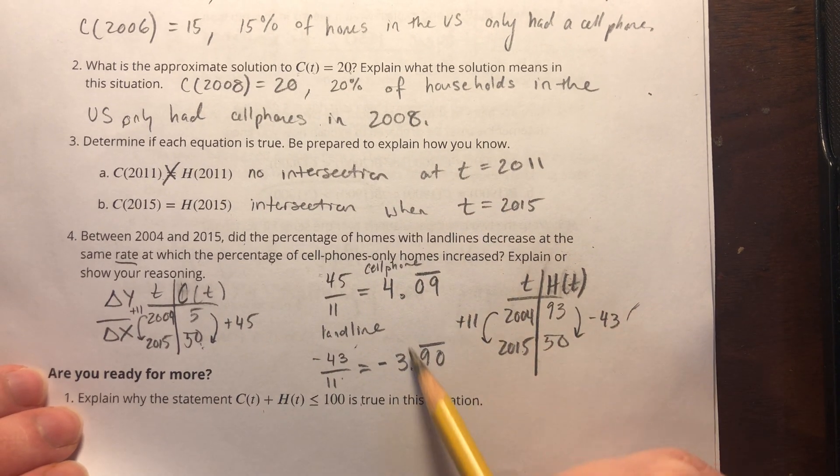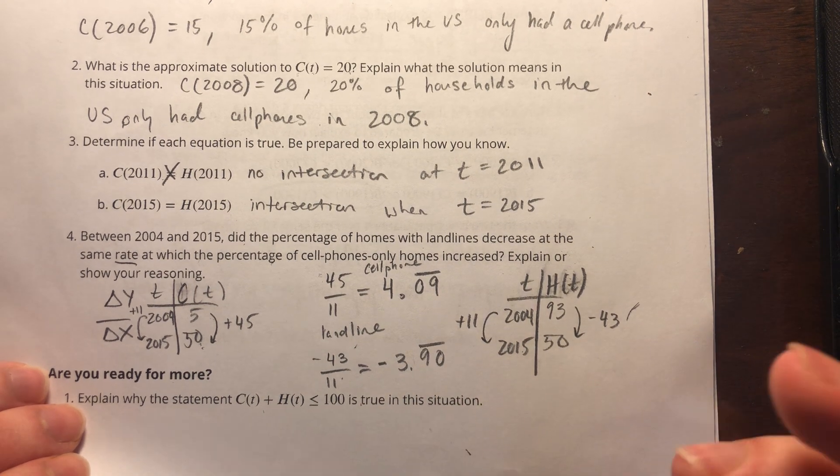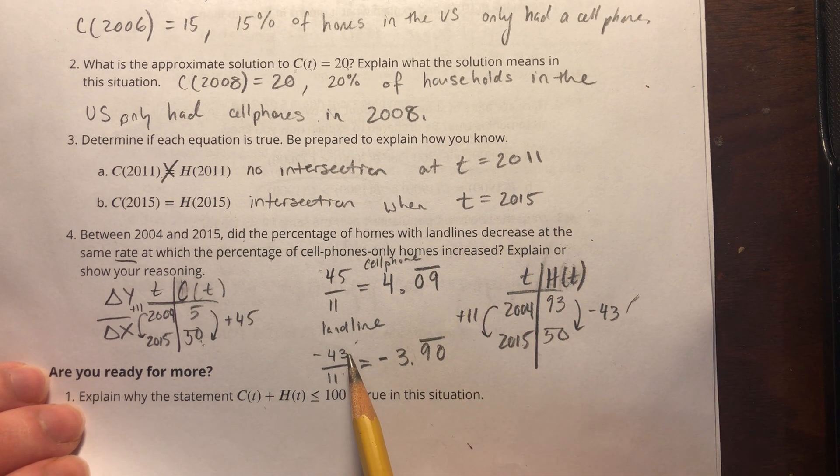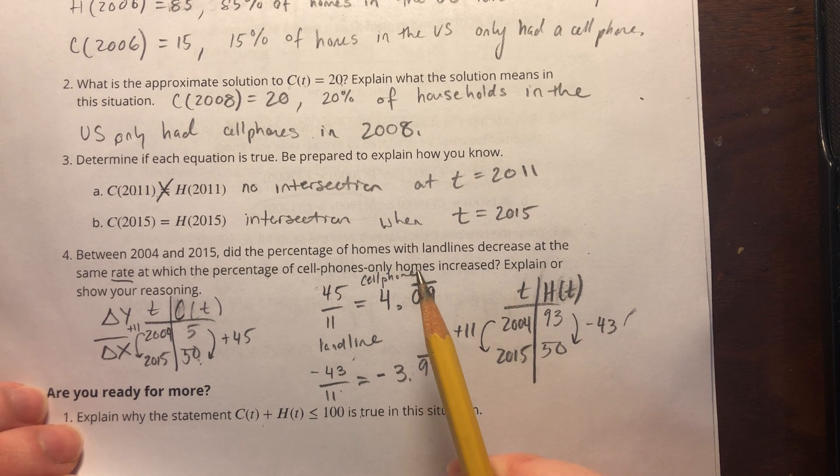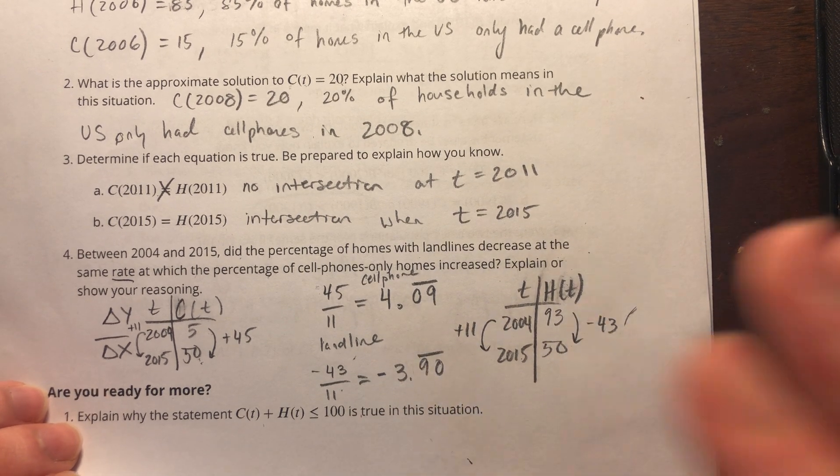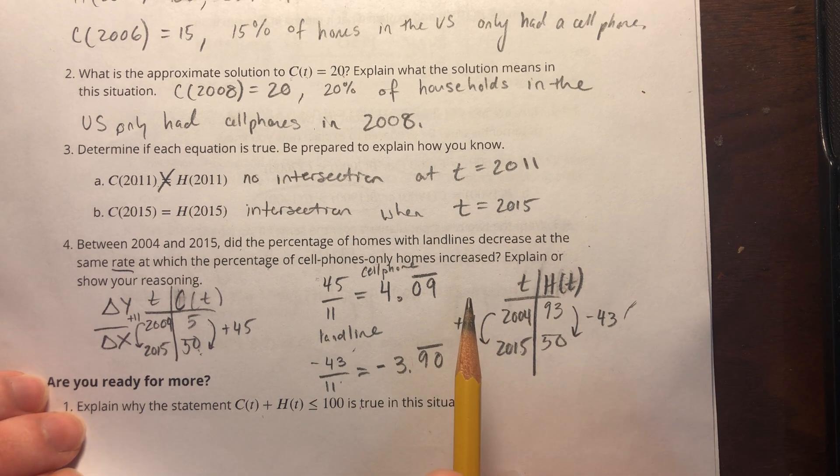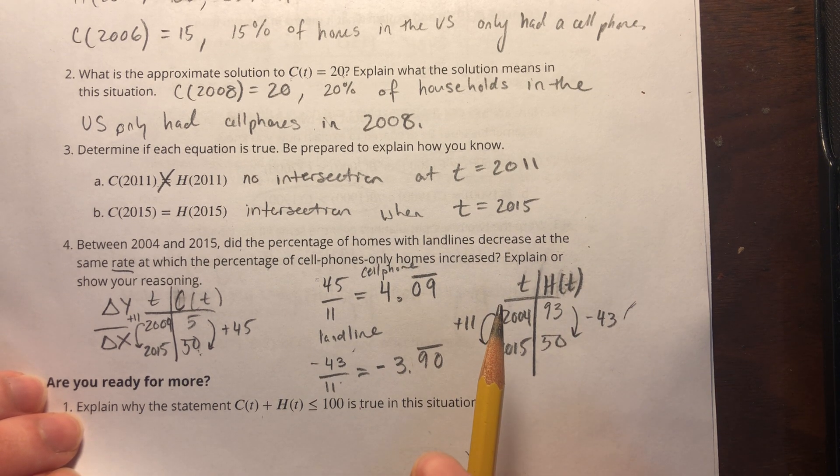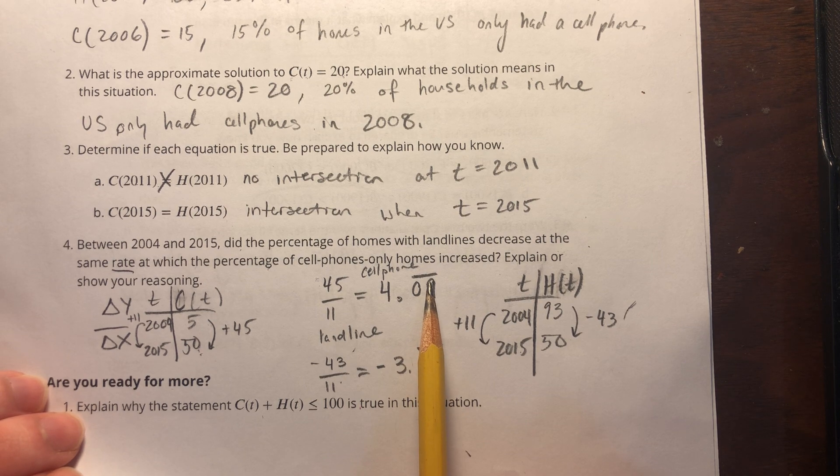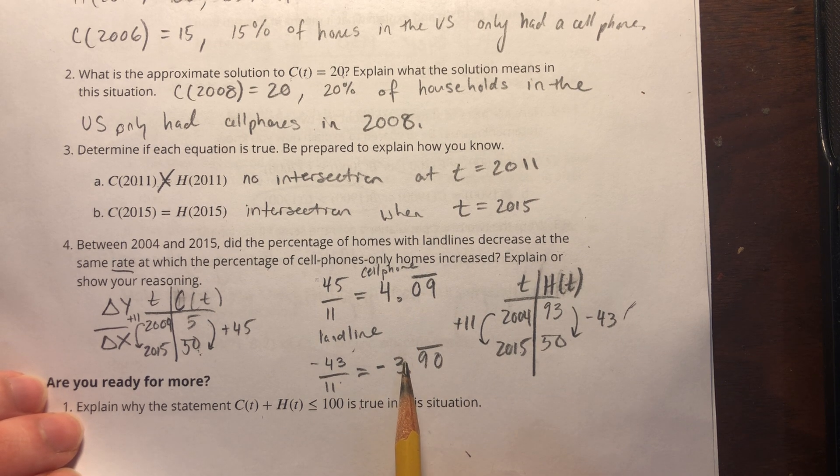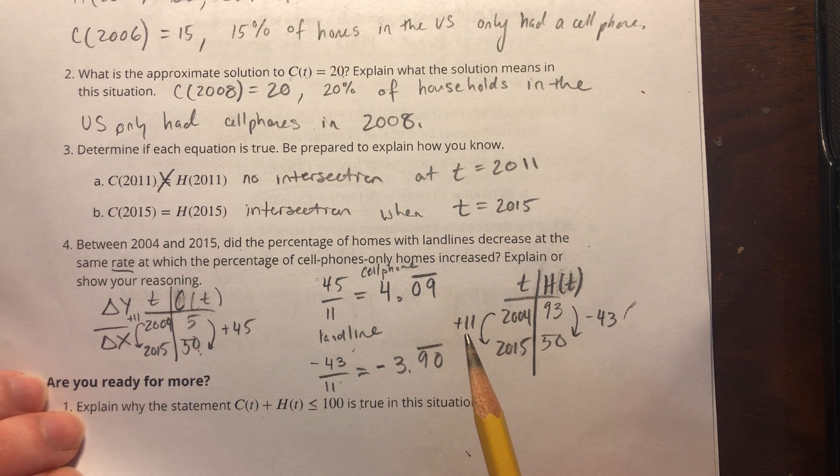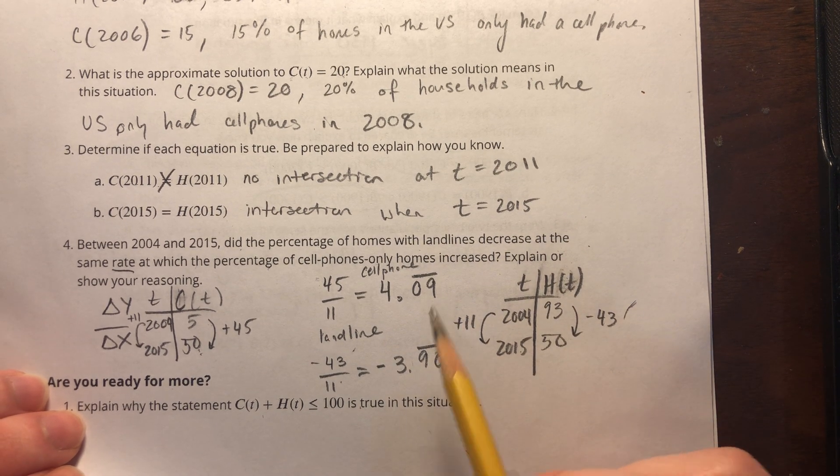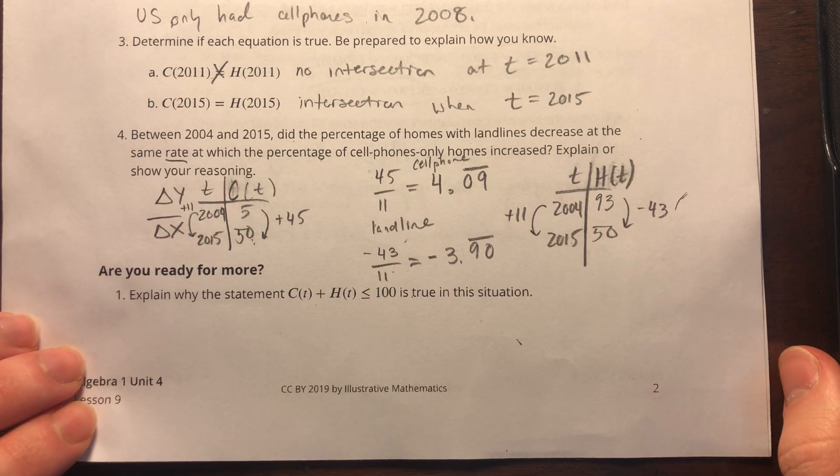So cell phones are increasing at a greater rate. They're really just asking did they have the same rate, and clearly they did not. Although it's very possible that if you said 95 here, you would see they're the same rate. These are rather close, so I would say they're pretty close. By my estimation, cell phones increased a little bit more than they decreased. Depending on what numbers you chose, you could very easily have said that it was the same rate.